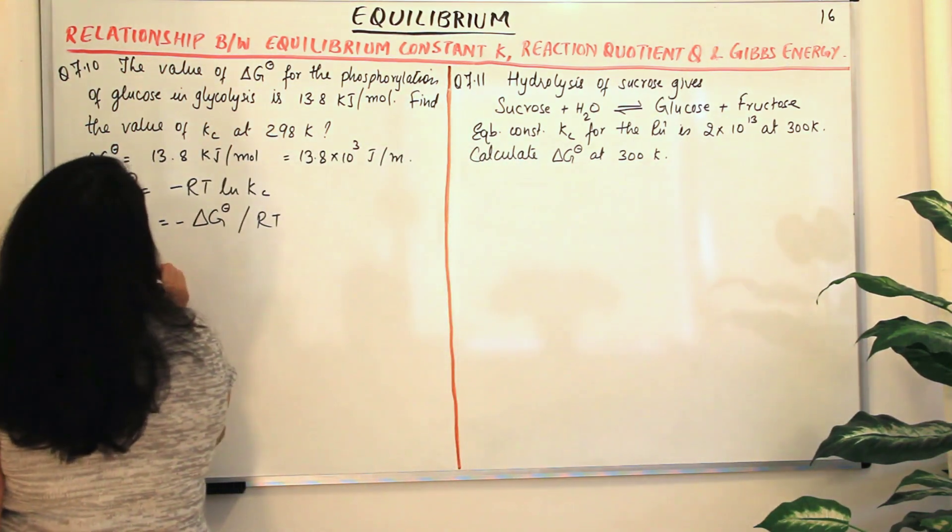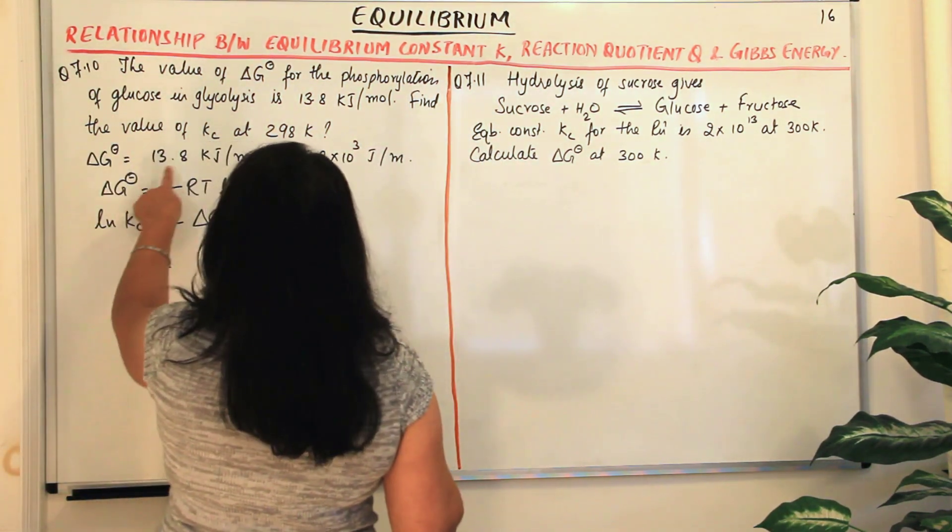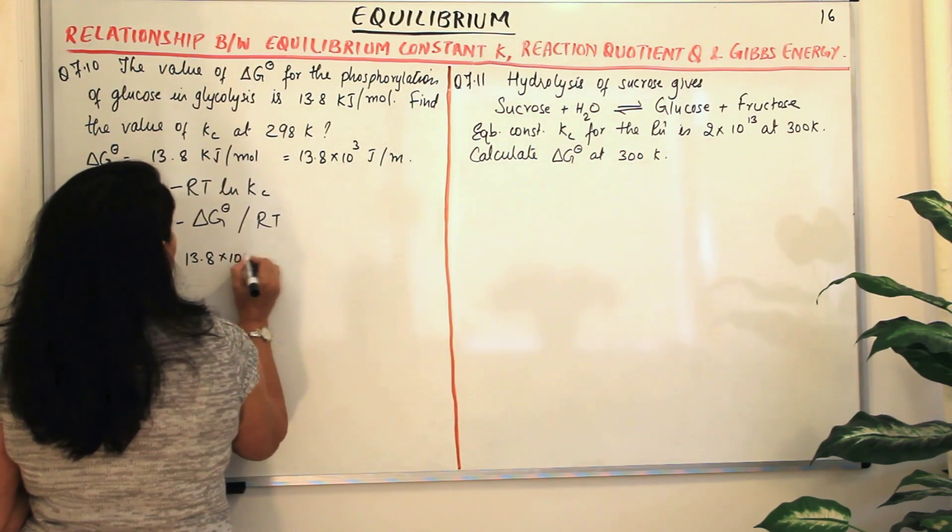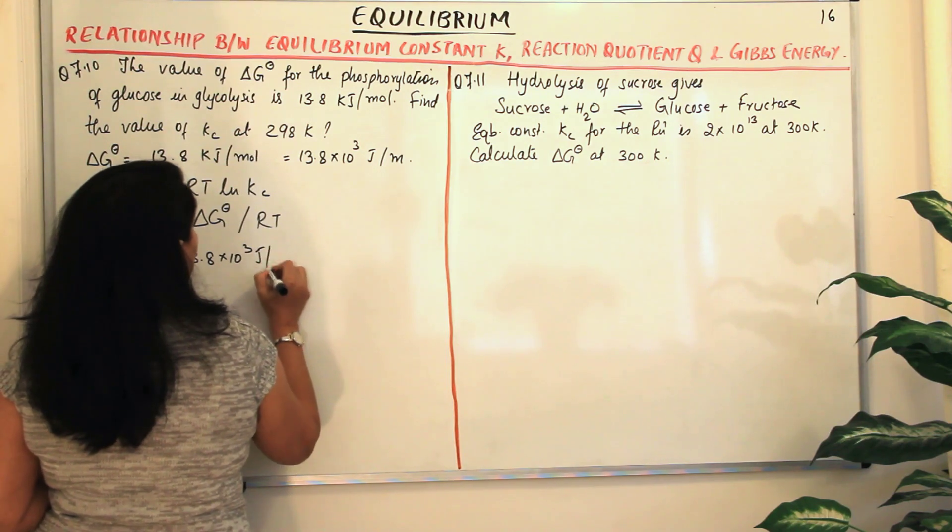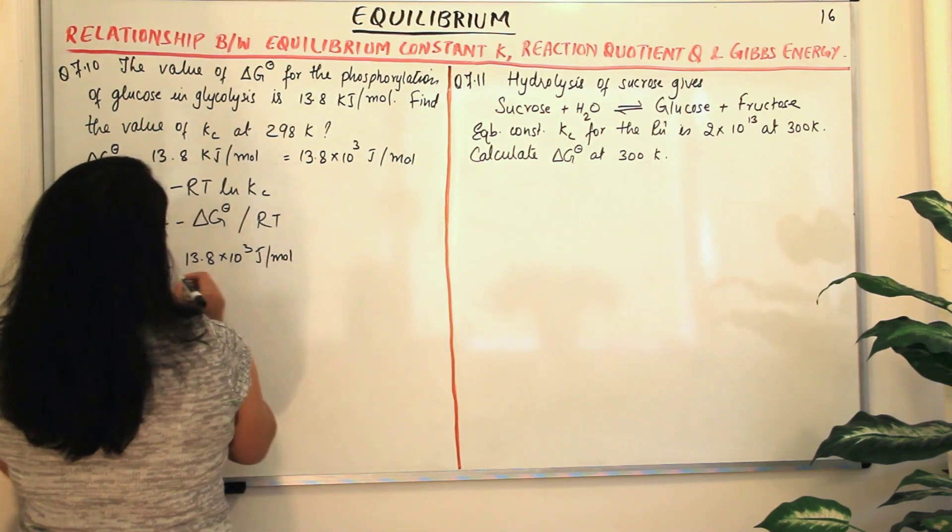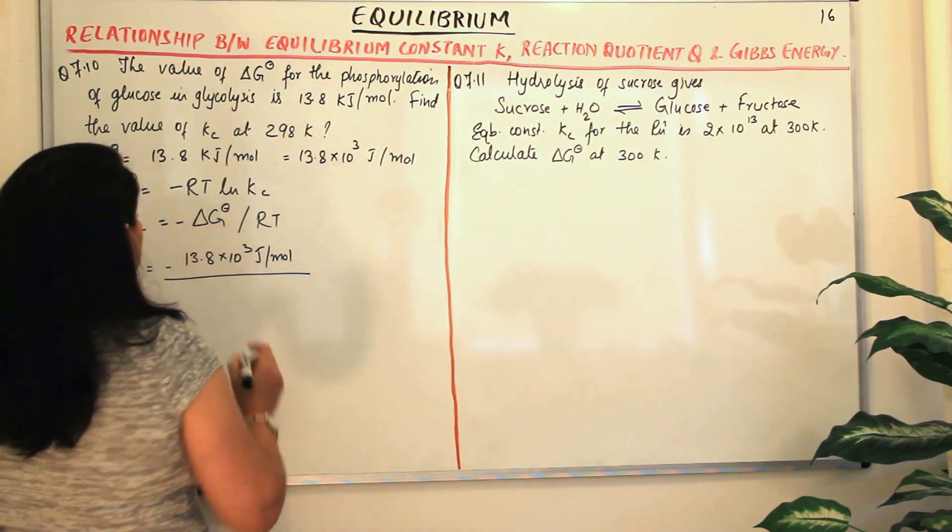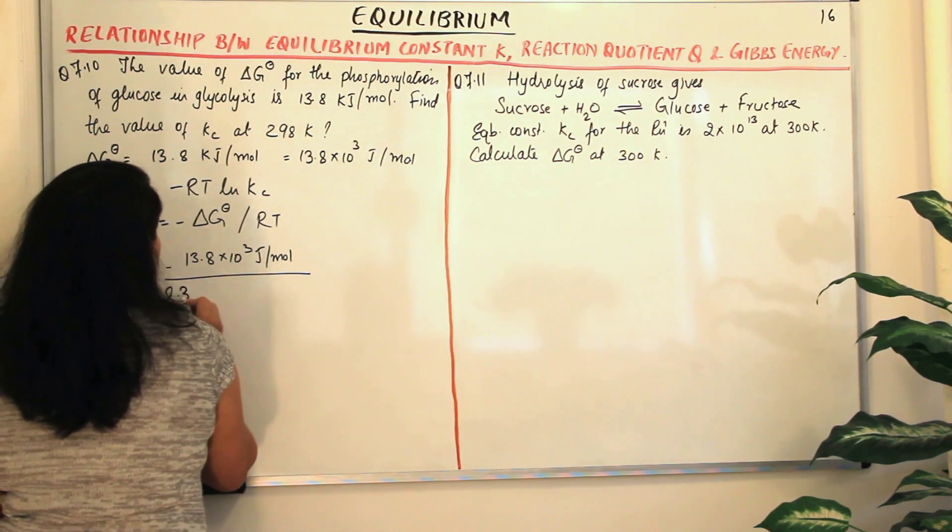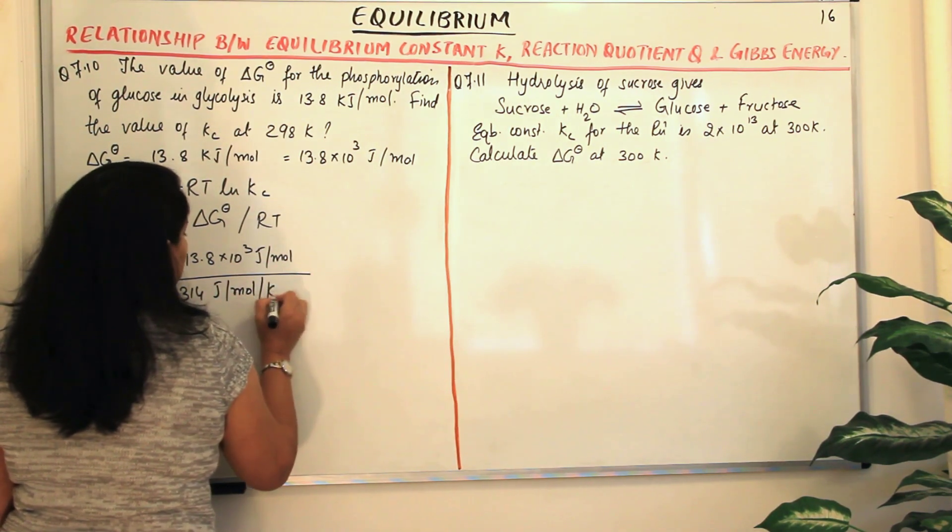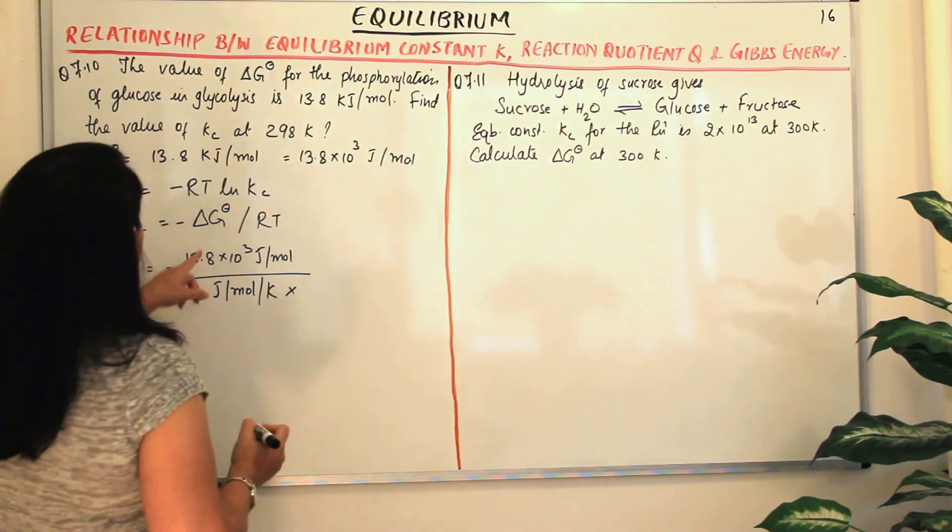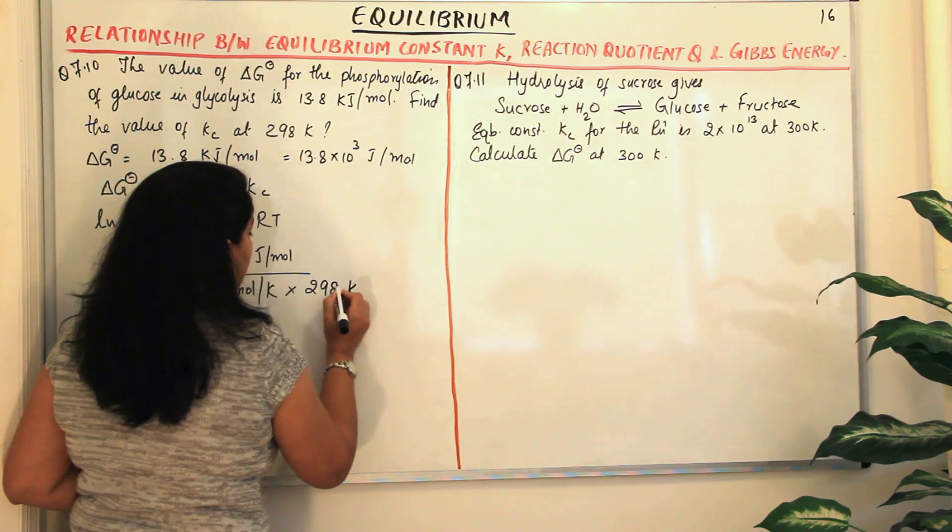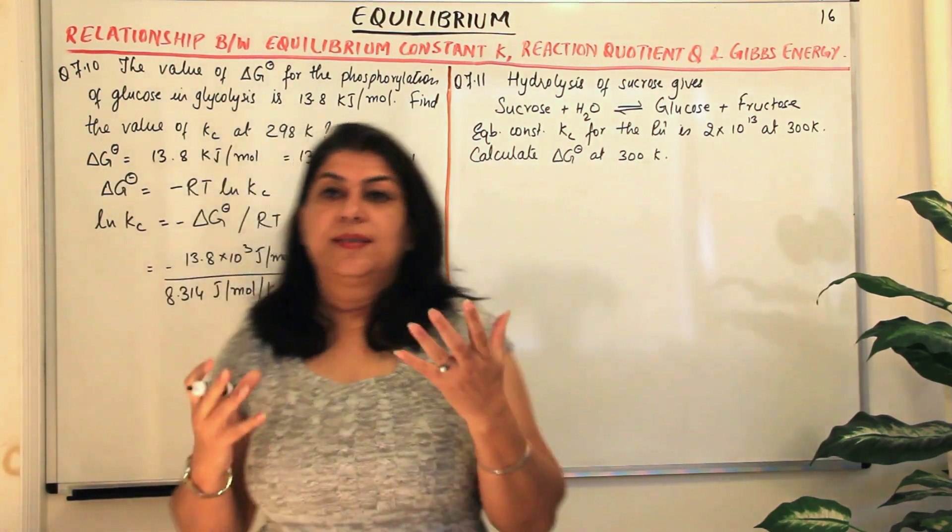Now we have the values. This is minus delta G naught would be 13.8 into 10 to the power 3 joules per mole, divided by R which is 8.314 joules per mole per Kelvin, into T. What is the temperature given to us? 298 Kelvin, which is the standard temperature.